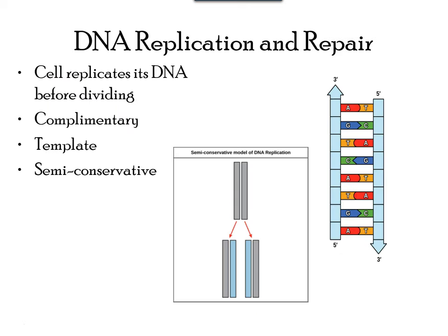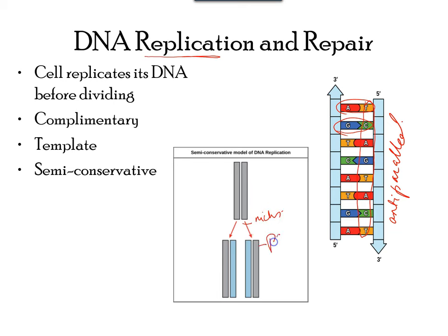When a cell divides, it is important that each daughter cell receives an identical copy of the DNA. This is accomplished by the process of DNA replication, which starts during the S phase (synthesis phase) of the cell cycle. Recall that adenine pairs with thymine and guanine with cytosine, meaning the two strands are complementary to each other. A strand with the sequence A-G-T-C-A-T-G will have a complementary strand of T-C-A-G-T-A-C. During DNA replication, the strands unzip at one end and, just like a zipper, the parental strand dictates the formation of new strands. This process is considered semi-conservative replication, as one old strand and one new strand go into each daughter cell.